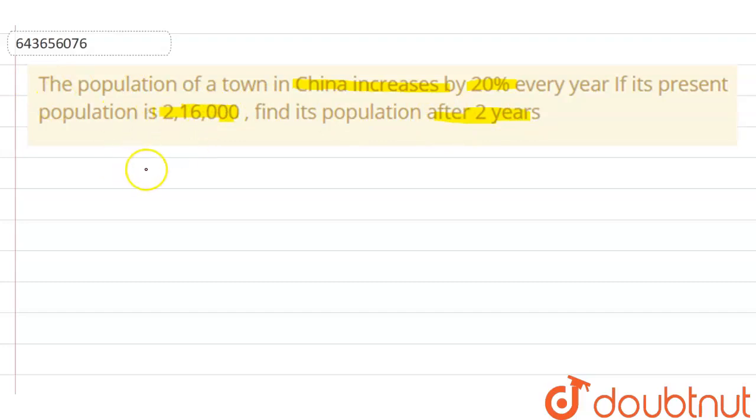Let me solve this. We have the present population which is 2,16,000. The question asks for population after two years, so time t equals two years.